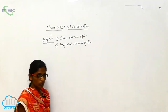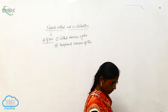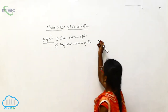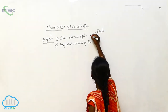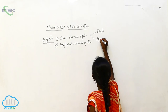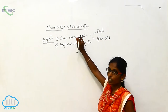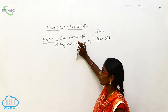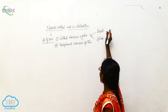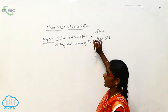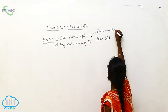The Central Nervous System consists of two parts: the Brain and the Spinal Cord. The Brain is covered by the Brain Box.